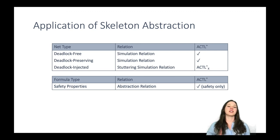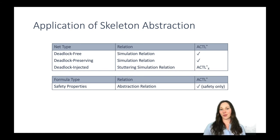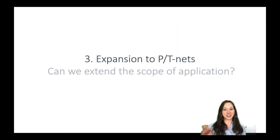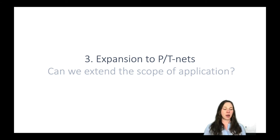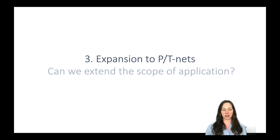This is the application field of skeleton abstraction. If we know the net type or the formula type, we can apply the skeleton abstraction method effectively to our colored Petri Net. But this is not enough for us — we want to extend the field of application. Can we expand this to normal place-transition nets? Sometimes we have really large place-transition nets, and by folding and then decolorizing we generate a much smaller place-transition net related to our original one.